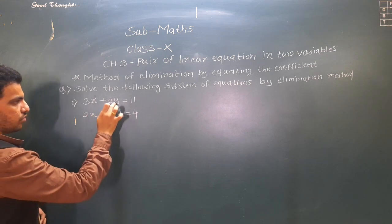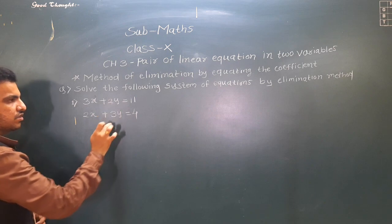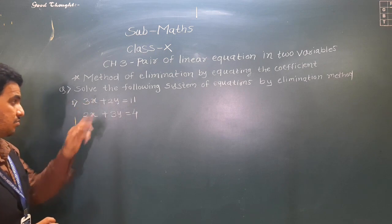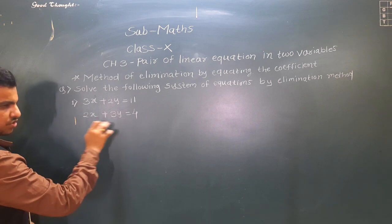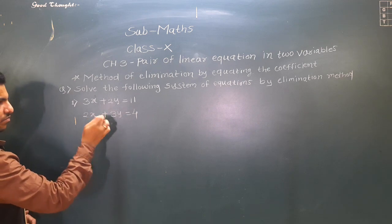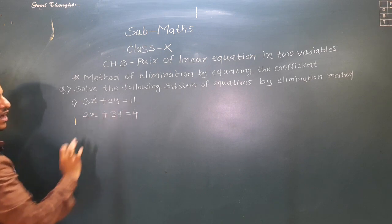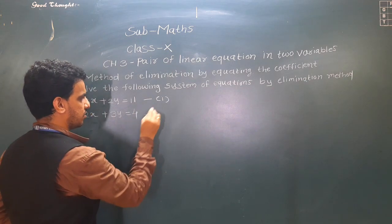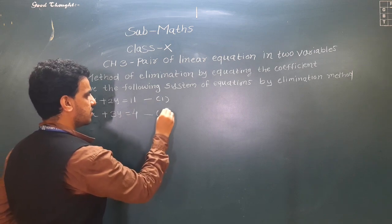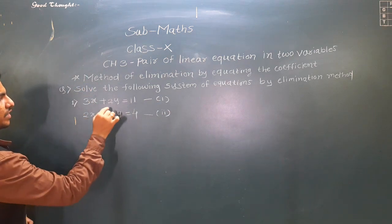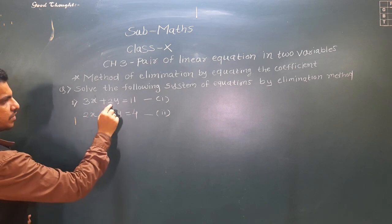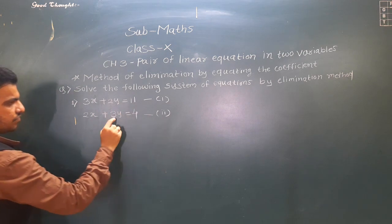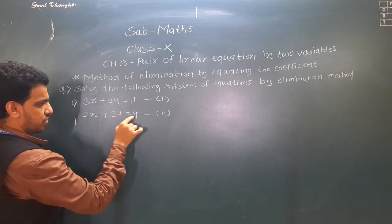We need to make the coefficient of y equal to 6 in both equations, and then subtract the two equations. Keep this in mind: if the signs are the same, we subtract the two equations; if the signs are different — one plus, one minus — we add the two equations. So I will multiply equation 1 by 3 and equation 2 by 2.